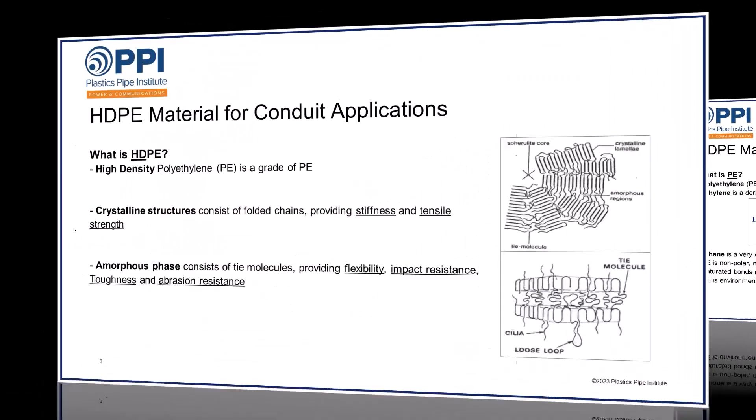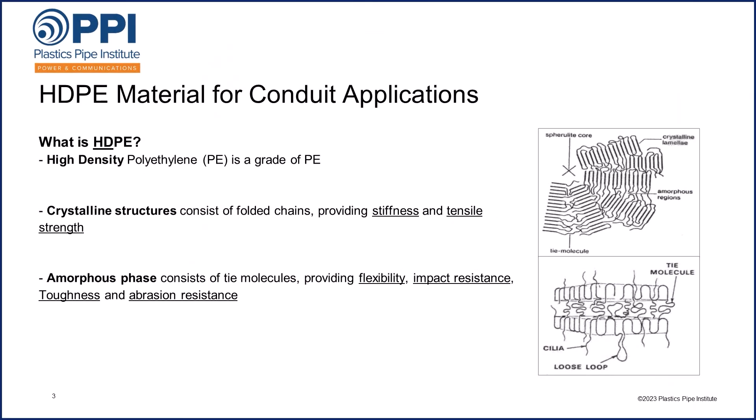Now what is high-density polyethylene? HDPE is a grade of polyethylene — a specific type with specific physical properties. It is made of a combination of crystalline structures, which consist of folded chains that provide stiffness and tensile strength, and an amorphous phase or regions, which consist of tie molecules that provide the flexibility, toughness, impact resistance, and abrasion resistance.